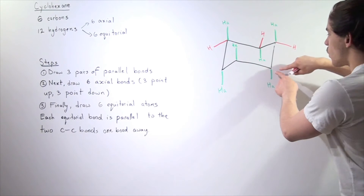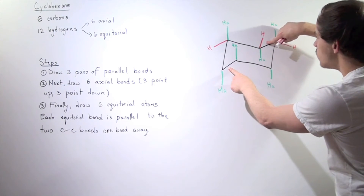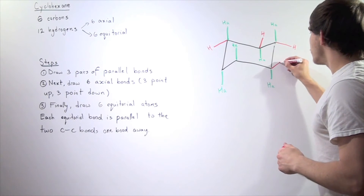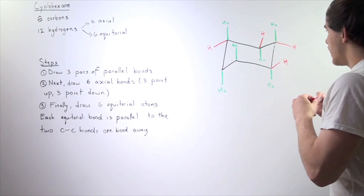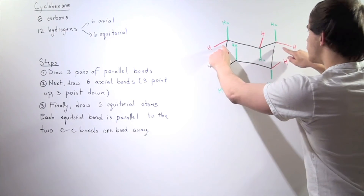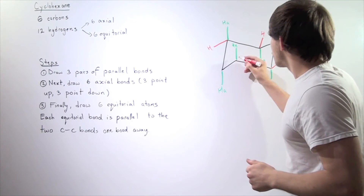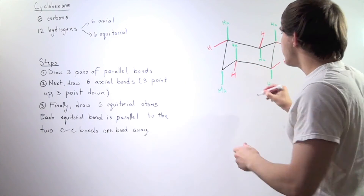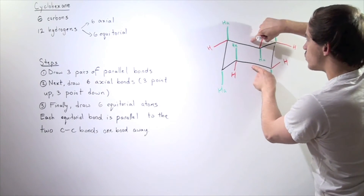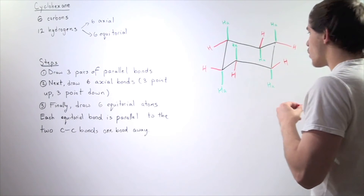Fourth one — same story: we start at this carbon, one over, one over, and it should be parallel to either of these two bonds. Next one: one over, one over, it should be parallel to either of these two, so let's go down. And the same for the last one — one over, one over, so it should be parallel to one of these. And this is our last equatorial bond.